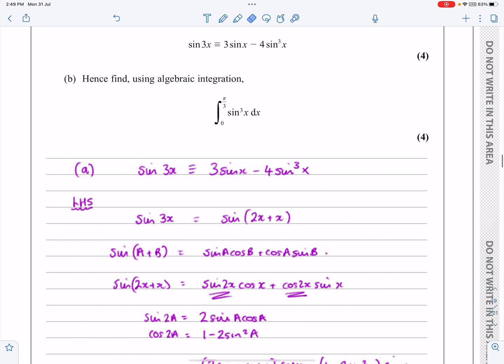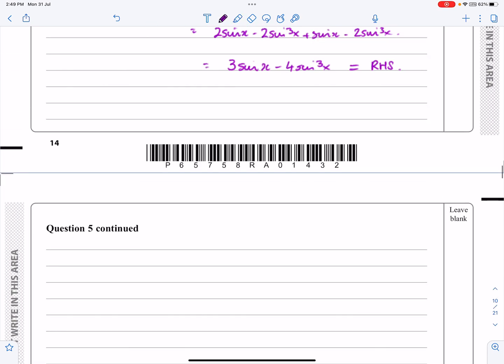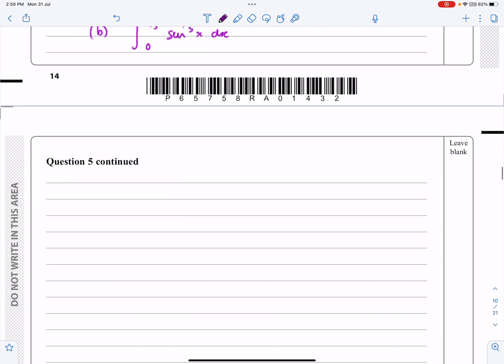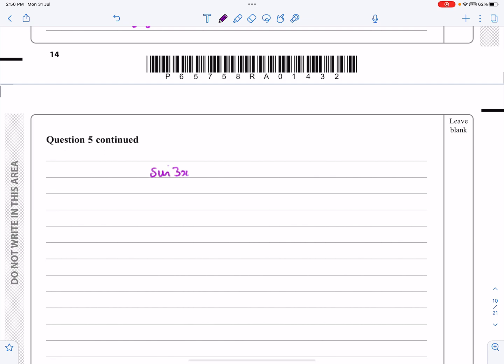Part B says, can we integrate sine cubed x. I'm going to need to rearrange my trig identity and then try and integrate it. Can we integrate between pi over 3 and 0, sine cubed x dx. So the first thing I need to do is to say, if sine 3x is identical to 3 sine x minus 4 sine cubed x, then 4 sine cubed x is equal to 3 sine x minus sine 3x, which means that sine cubed x is a quarter of all of that, a quarter times 3 sine x minus sine 3x.